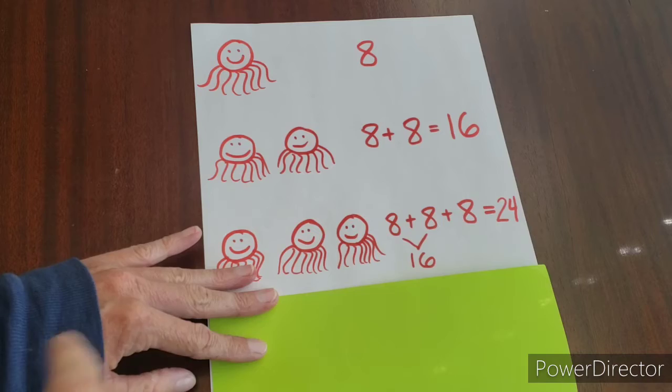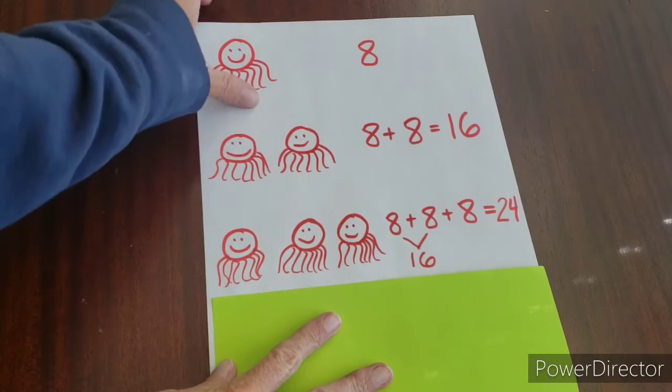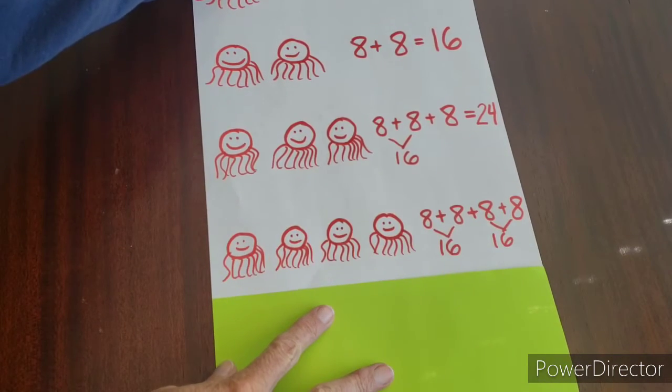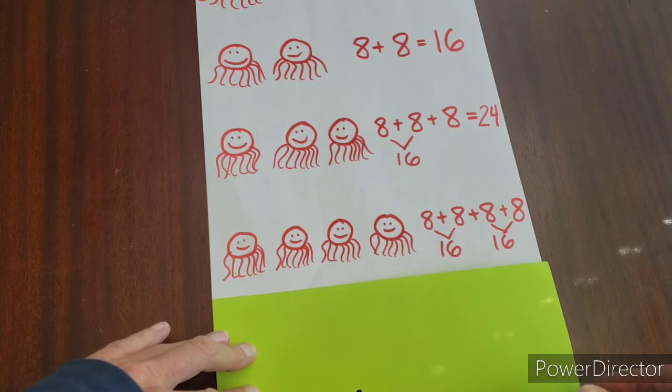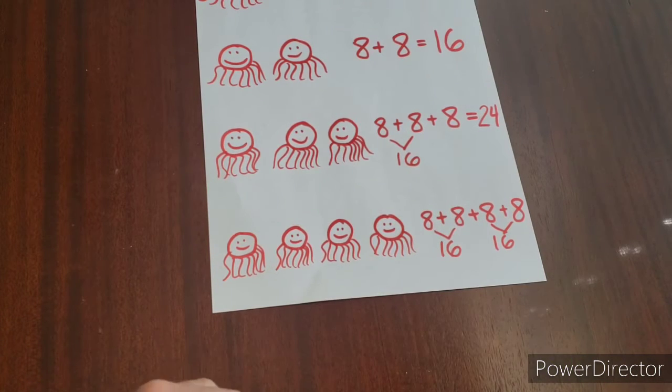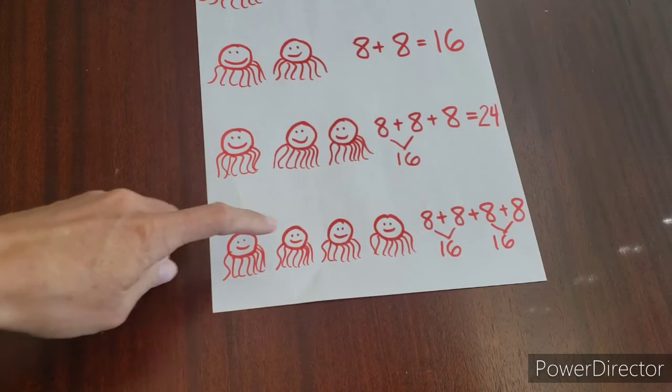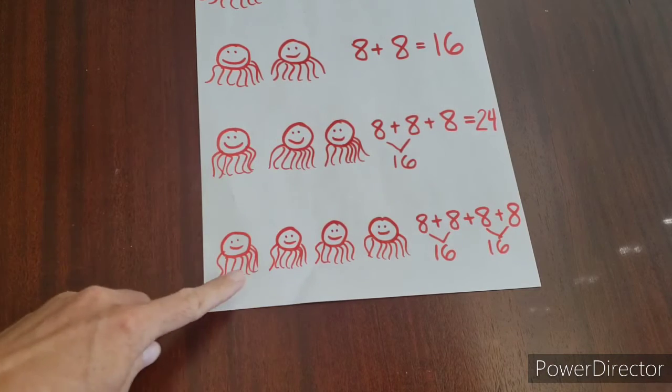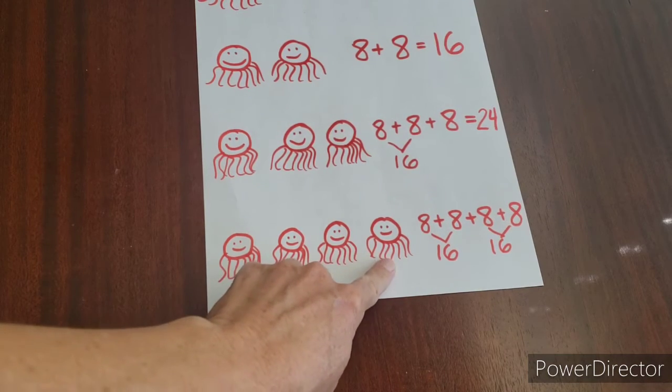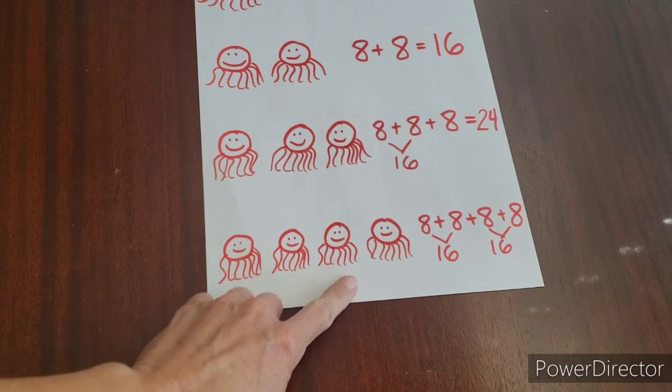Now we're going to move on to adding four octopi. Okay, so if we have four octopi, that's really like saying eight plus eight plus eight plus eight. So there's a couple ways that we can do this. You can draw it out in a picture, and you can draw eight legs on each octopi and count every single leg.